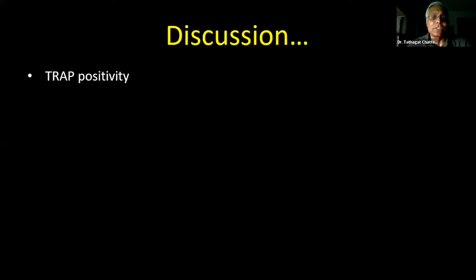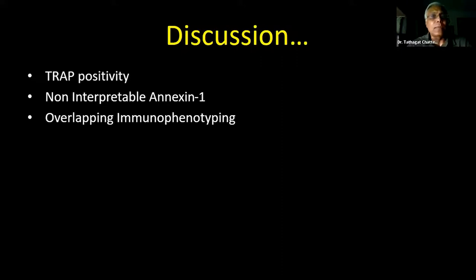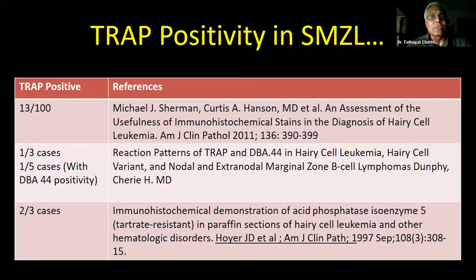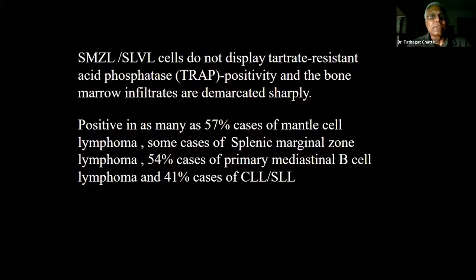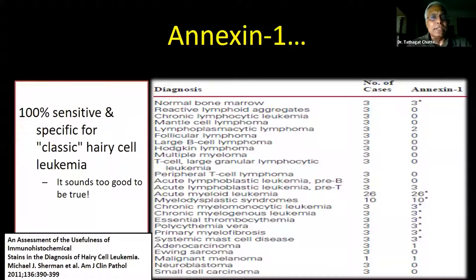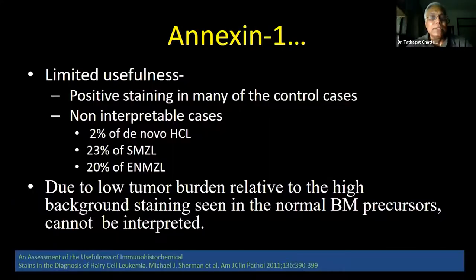The reason we were confused was TRAP positivity, which is generally not seen in SMZL. Annexin A1 is always positive only in hairy cell leukemia. However, Annexin A1 has limited usefulness because it positively stains many control cases — it is non-interpretable in 2% of de novo hairy cell leukemia. Due to low tumor burden relative to high background staining from normal marrow elements also expressing Annexin A1, interpretation is difficult. So Annexin A1 must be compared with CD20 staining, and BRAF V600E is preferred to Annexin A1 in IHC diagnosis.